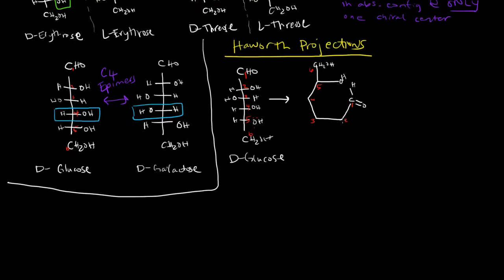What happens is that the electrons on the C5 OH group can attack nucleophilically the C1 carbon. They can attack from either the top or the bottom, because C1 is sp2 hybridized — meaning it has trigonal planar geometry. Because it's a planar structure, you can attack from the top of the plane or the bottom of the plane. So when D-glucose cyclizes, we can form one of two things.